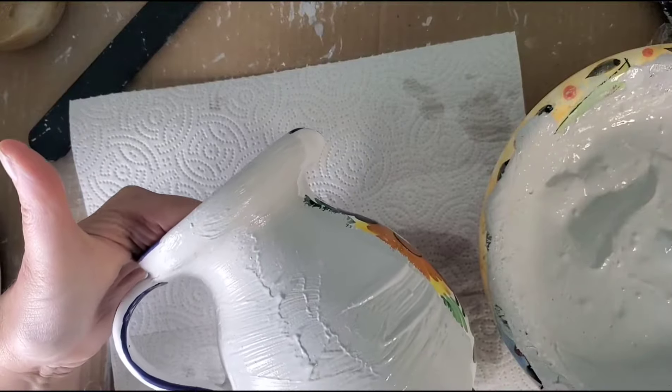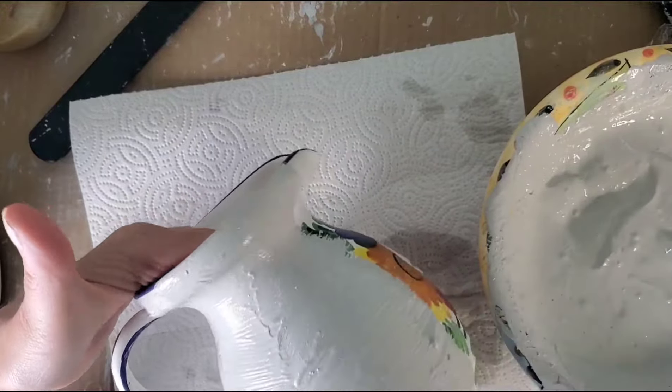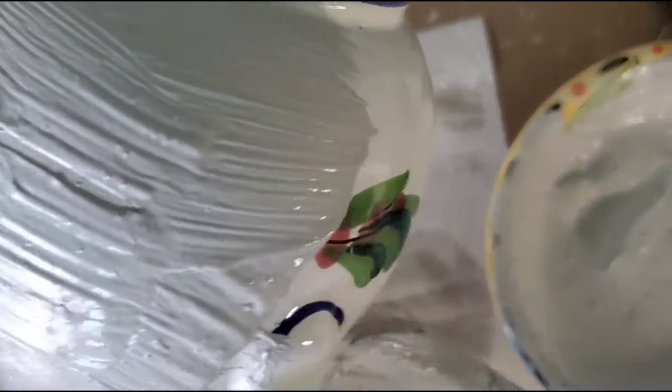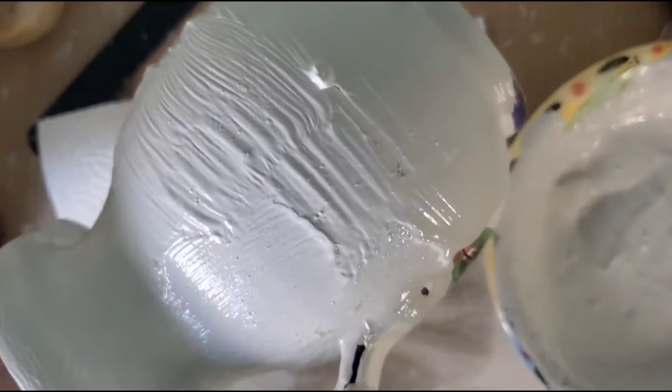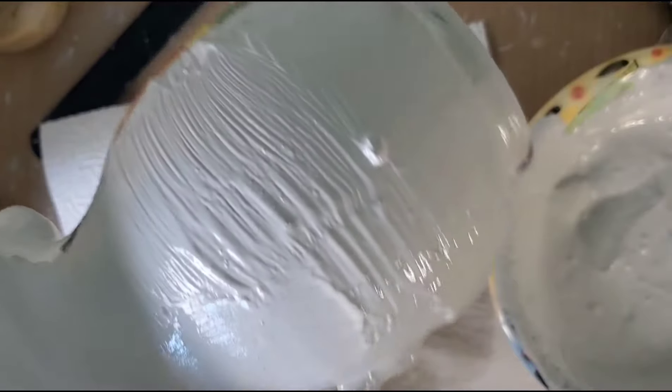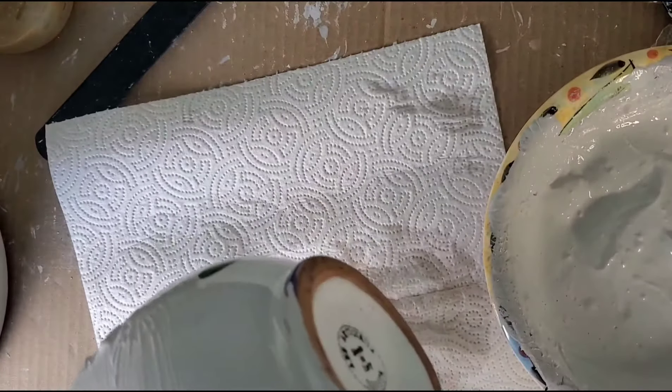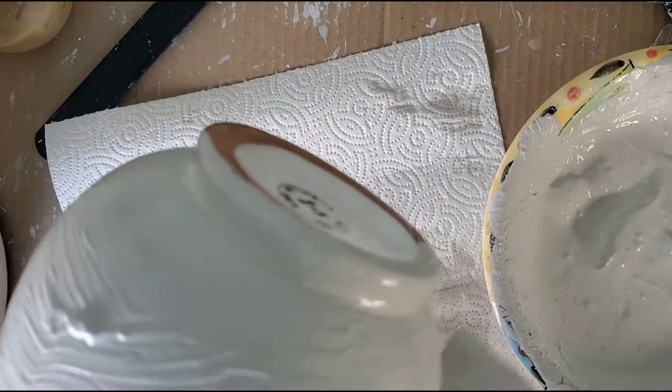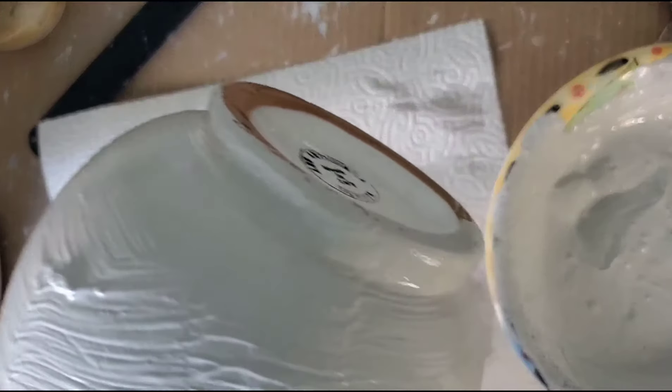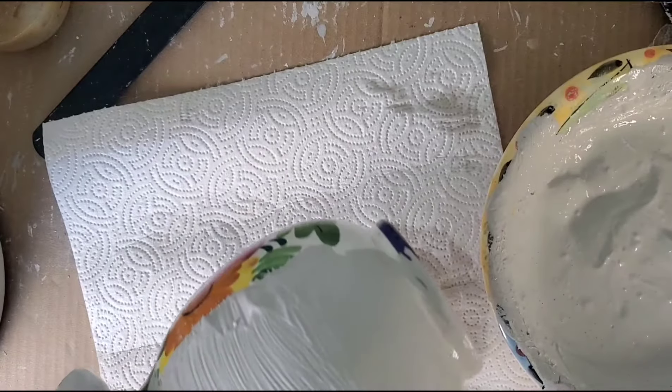After you take some fine grit sandpaper and rough up the surface a little bit, you just slap this on in any way that you choose. Depends on how much texture you want to create. I'm going to end up applying two coats on this piece.